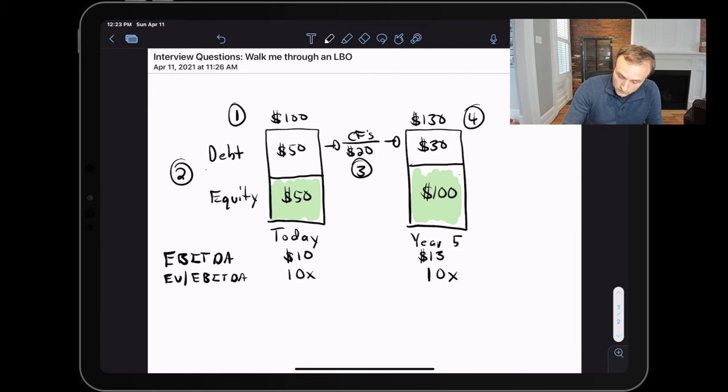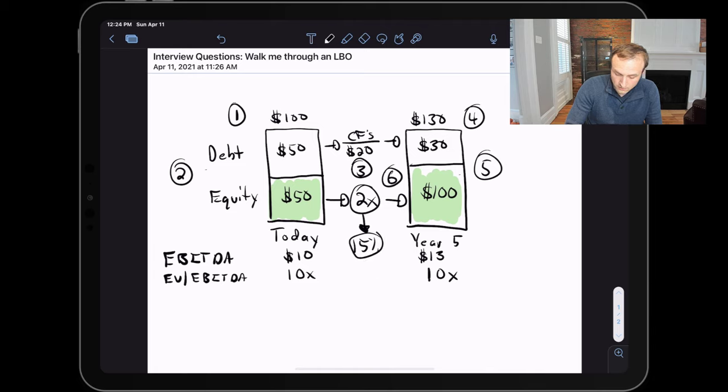The last step here, step six, is assessing our investment. So we put in fifty dollars and we got out a hundred dollars. So we generated a two times return, or two times multiple of money. So we put in fifty, we got out a hundred, and that roughly translates to a fifteen percent annualized return over five years. And there's actually a rule of thumb that we'll cover a little bit later on that fifteen percent. But short story here is this six-step framework is an LBO in a nutshell.